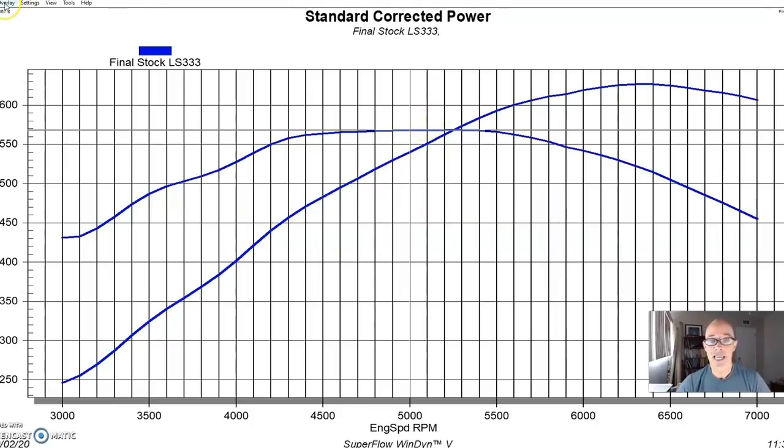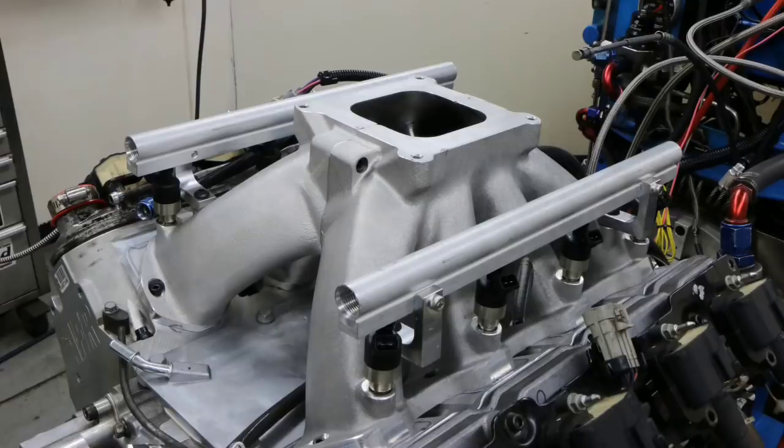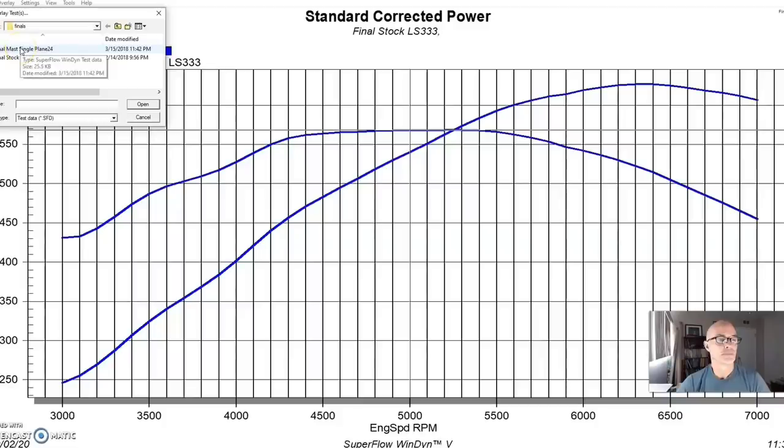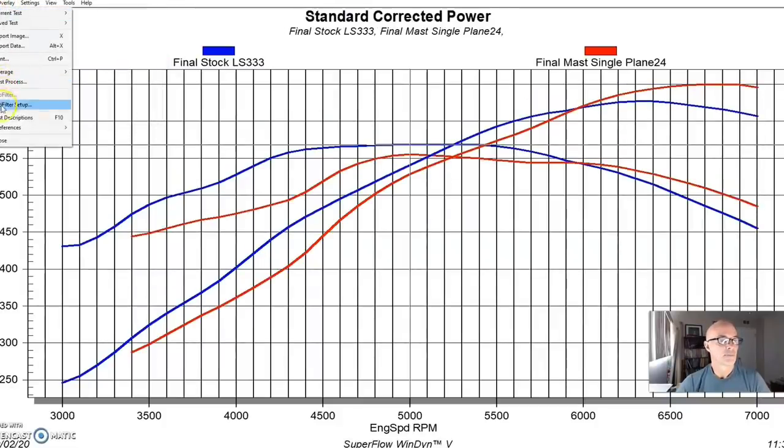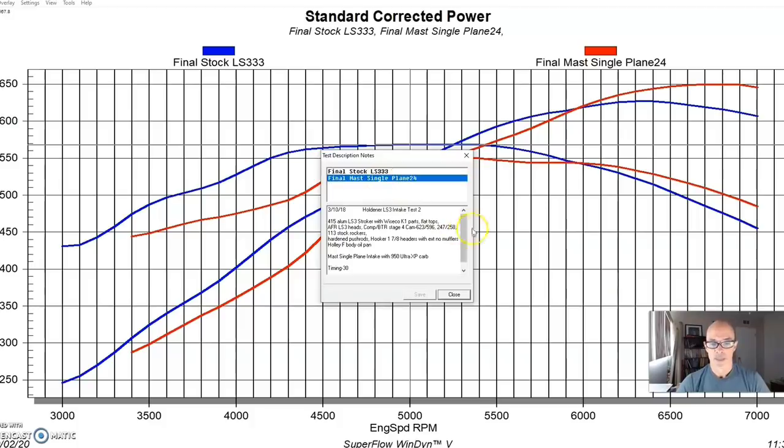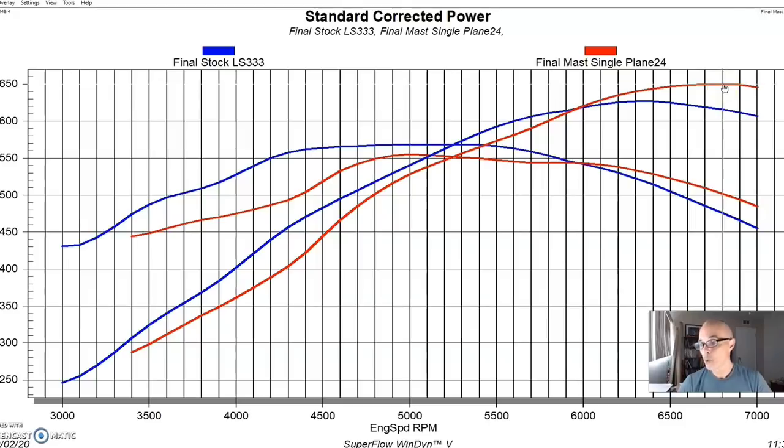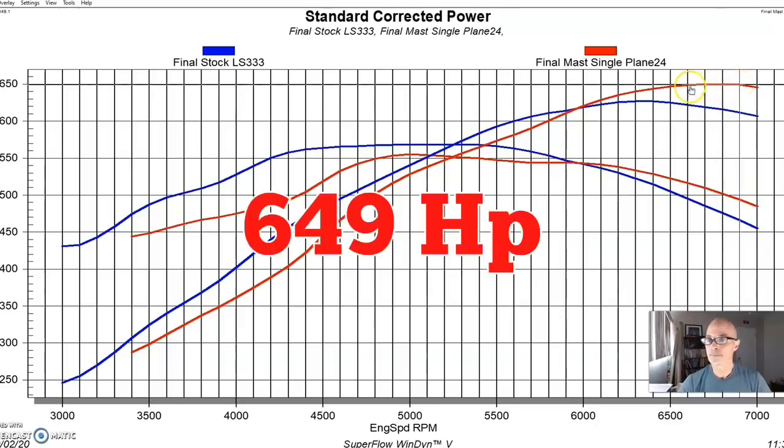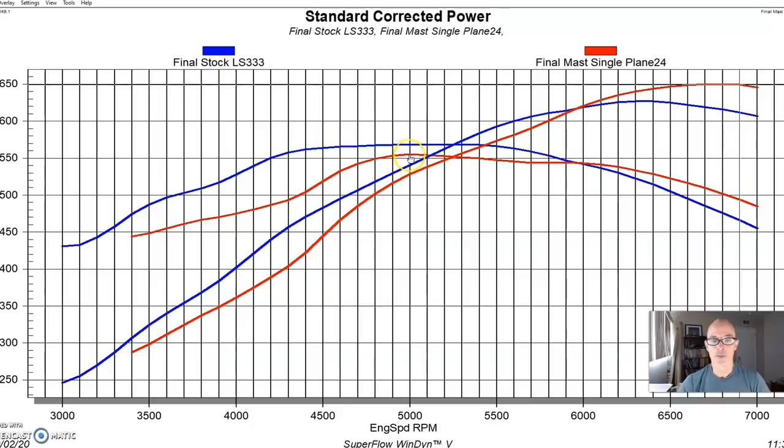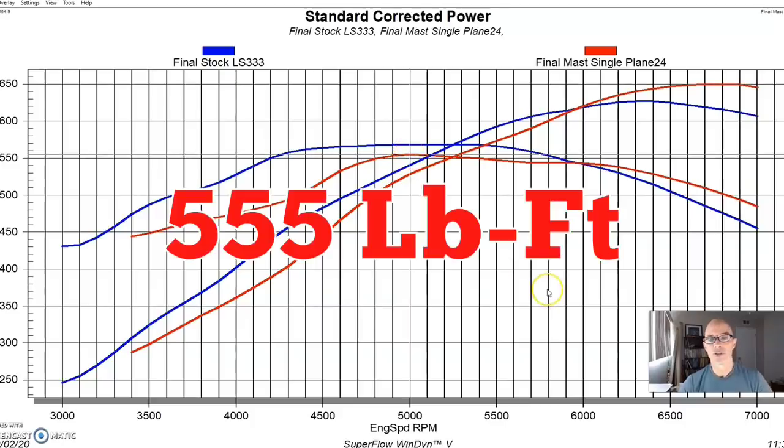So here's what happened when we put the same short runner single plane Mast intake manifold on this. And this was run with a carbureted application. Obviously, the single plane or the factory LS3 intake was run with EFI, but this was run with a 950 Ultra XP carburetor. So run with the single plane Mast intake, it made more peak power as we have come to expect, 649 horsepower. Peak torque dropped again, as we have come to expect, down to 555 foot-pounds.